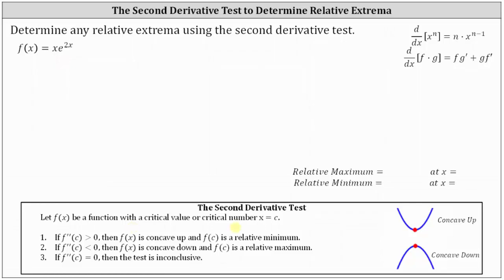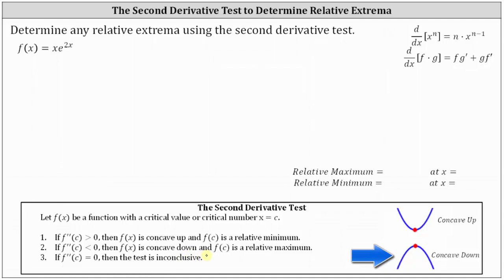If f of x has a critical number at x equals c, and f double prime of c is greater than zero, then f of x is concave up at x equals c, and therefore there must be a low point at x equals c, meaning f of c is a relative minimum. If f double prime of c is less than zero, then f of x is concave down at x equals c, and therefore f of c is a relative maximum.